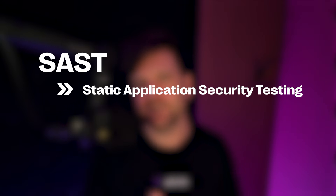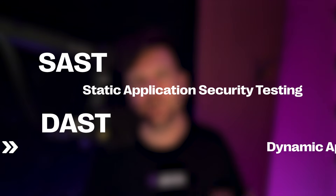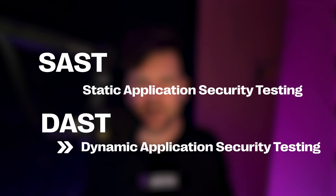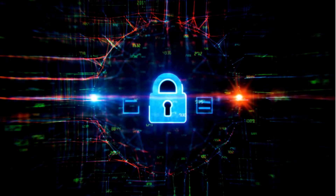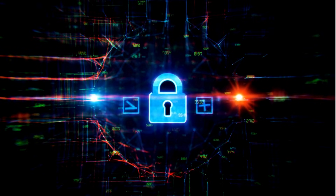SAST stands for Static Application Security Testing. DAST stands for Dynamic Application Security Testing. Both tools have the same goal: to detect security vulnerabilities inside your application. However, they operate at different stages of the software development lifecycle and have different protocols for doing so.